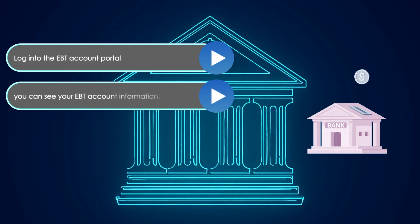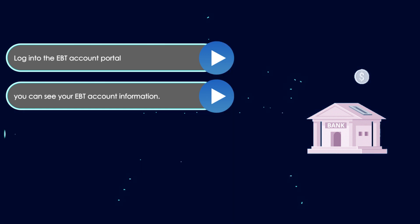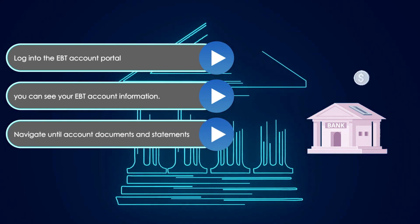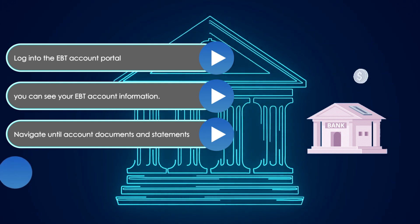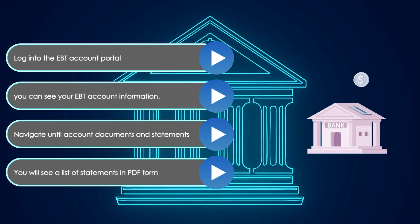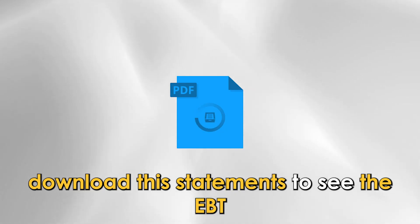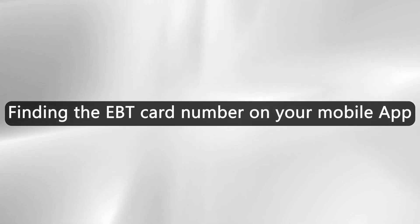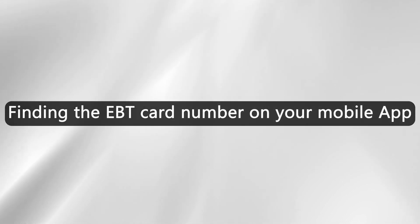After signing in to your EBT account, you can see your EBT account information. Navigate until you get to account documents and statements and click on them. You'll see a list of statements in PDF form from previous transactions. Download the statements to see the EBT card number on them.